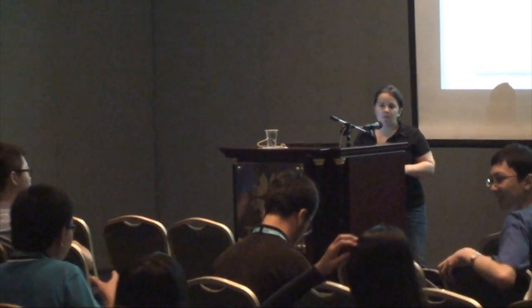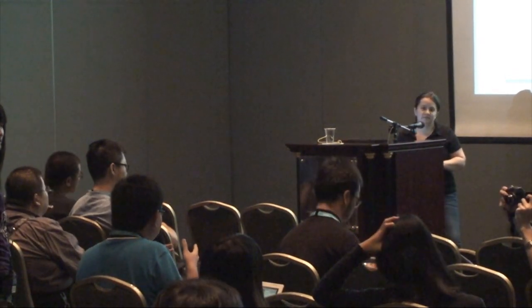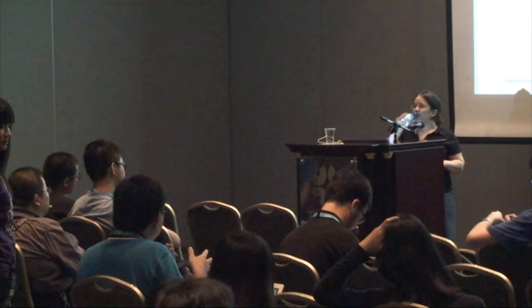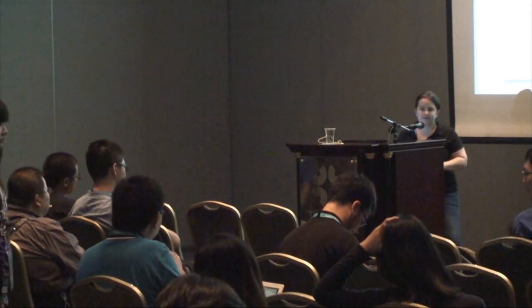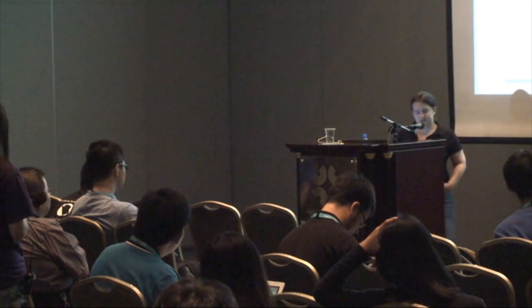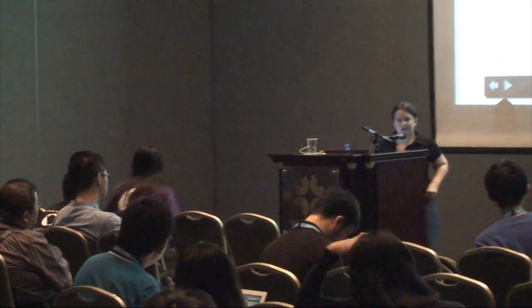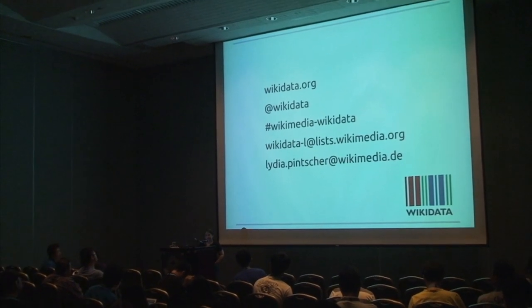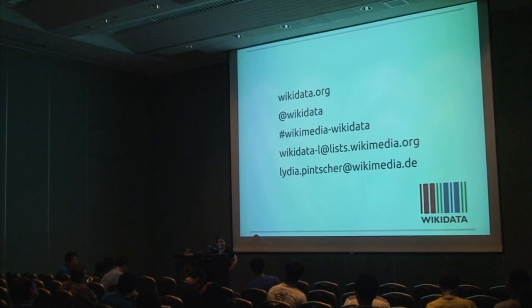Q: This reminds me of a service provided by Wolfram Alpha — the references there include UN sources. What's the difference between Wikidata and Wolfram Alpha? A: I have to confess I don't know Wolfram Alpha in detail, but first of all Wikidata is free data that you can use, for example, on Wikipedia. I also have no idea how much Wolfram Alpha provides data in different languages. And of course, editing — can you edit Wolfram Alpha?